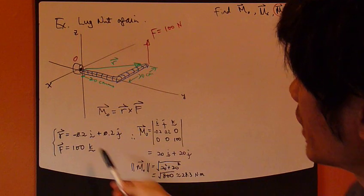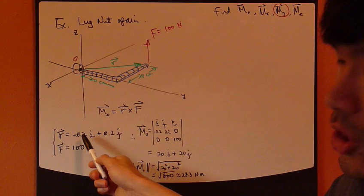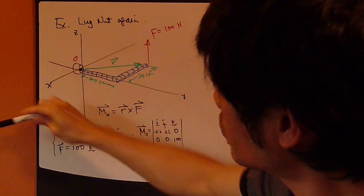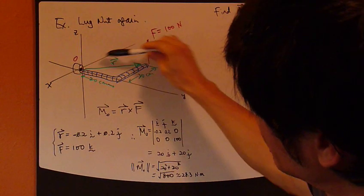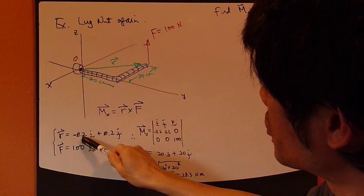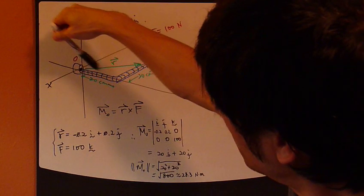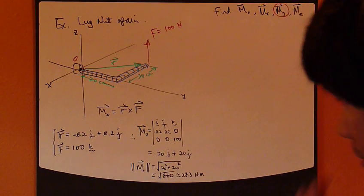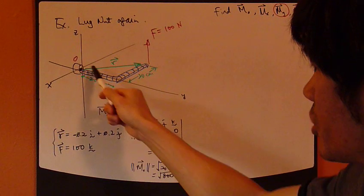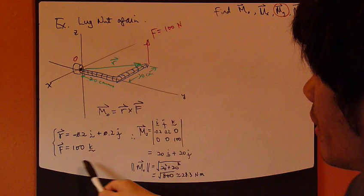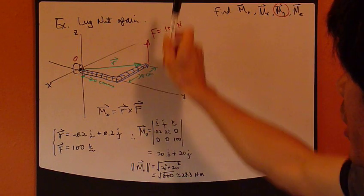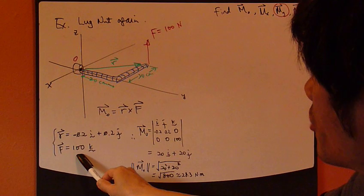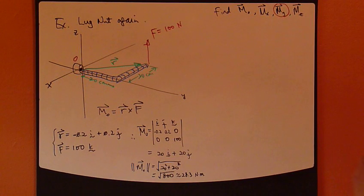which is negative 0.2 meters I direction. So, positive I is going this way. So, we're going back. So, negative 0.2 I plus 0.2 meters J. Okay? So, that's your R vector right here. The F vector, since it's pointing straight up. So, it has zero components in the X and Y direction, and it's 100K direction.